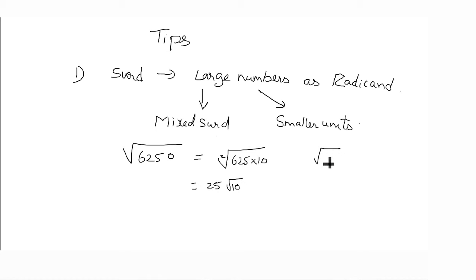Or let us take another example. Cube root of 243 ko I can write cube root of 27 into cube root of 9. Here I have separated in smaller units. Cube root of 27 is 3 into cube root of 9. Now let us see what is second tip.